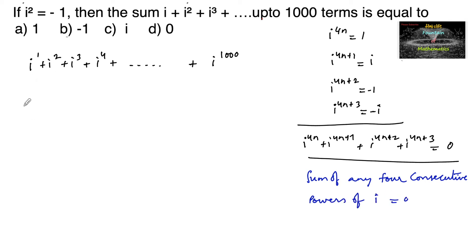So we can write i¹ + i² + i³ + i⁴—this is a sum of 4 consecutive powers of i. Similarly, i⁵ + i⁶ + i⁷ + i⁸,